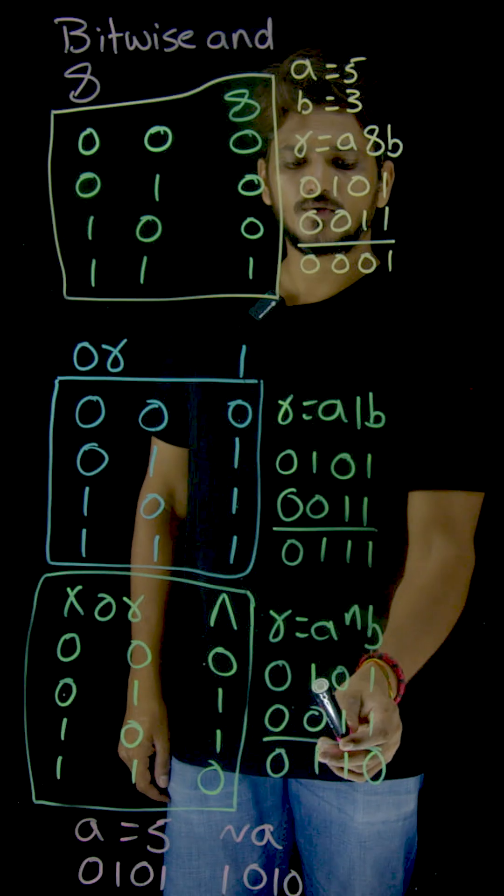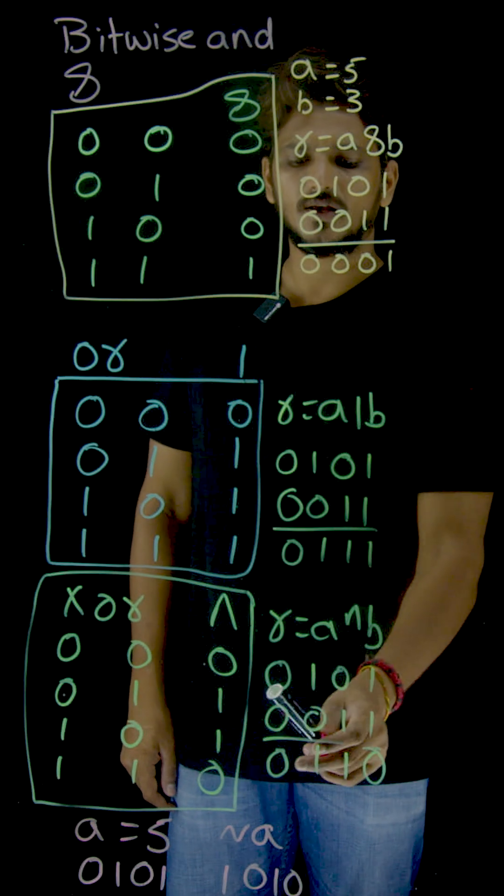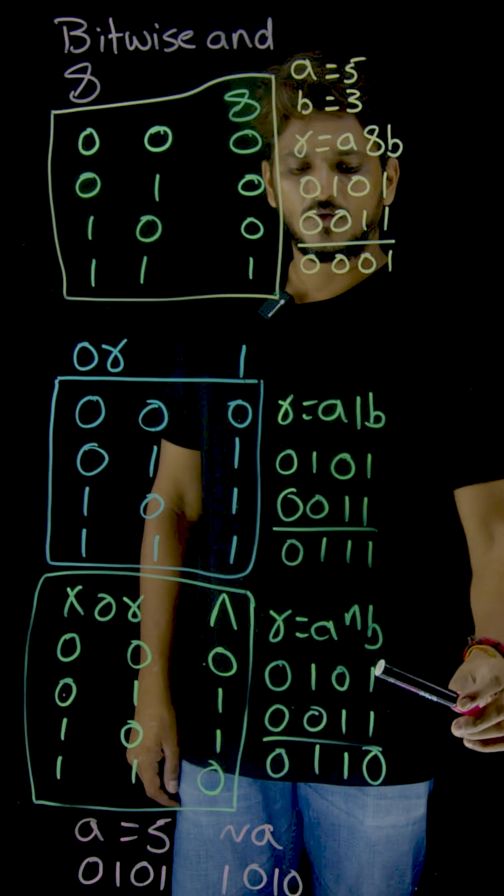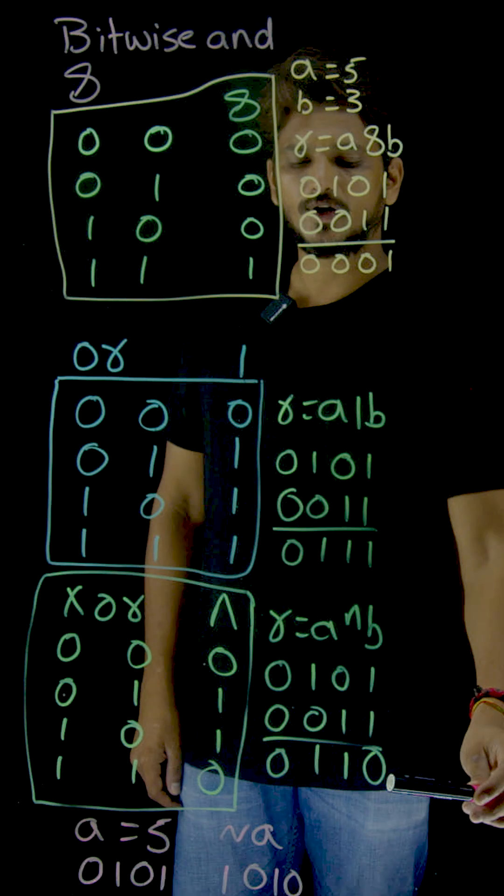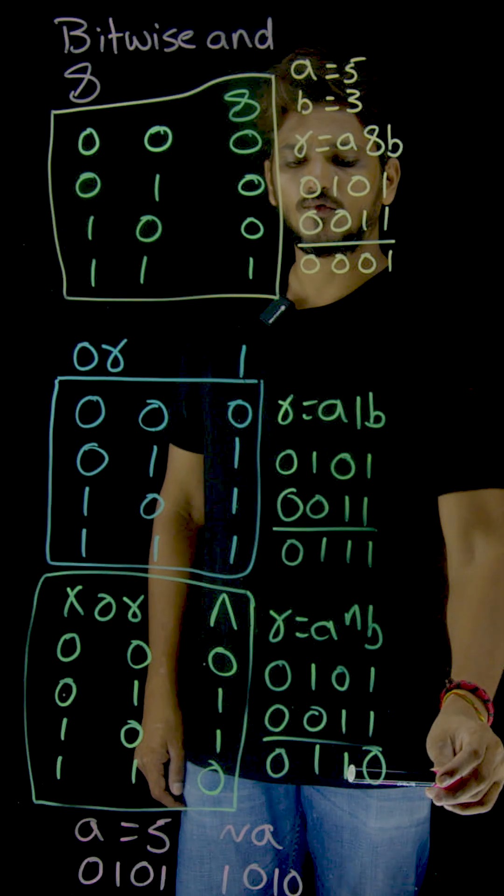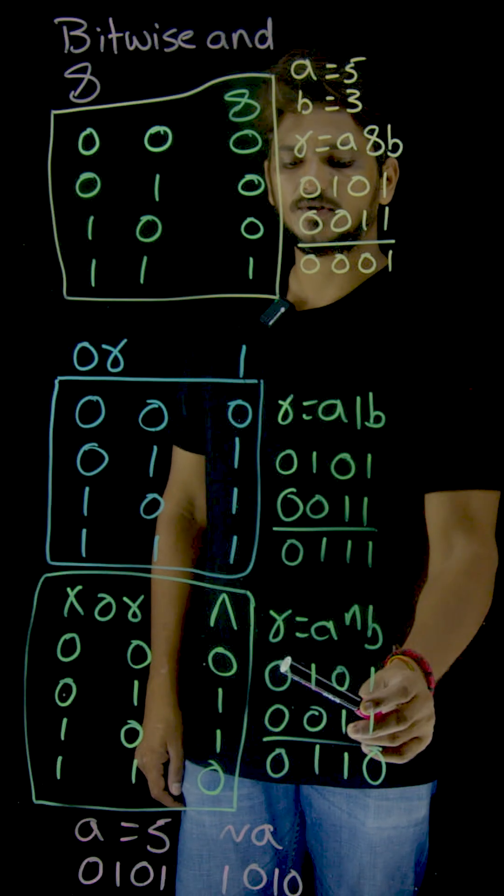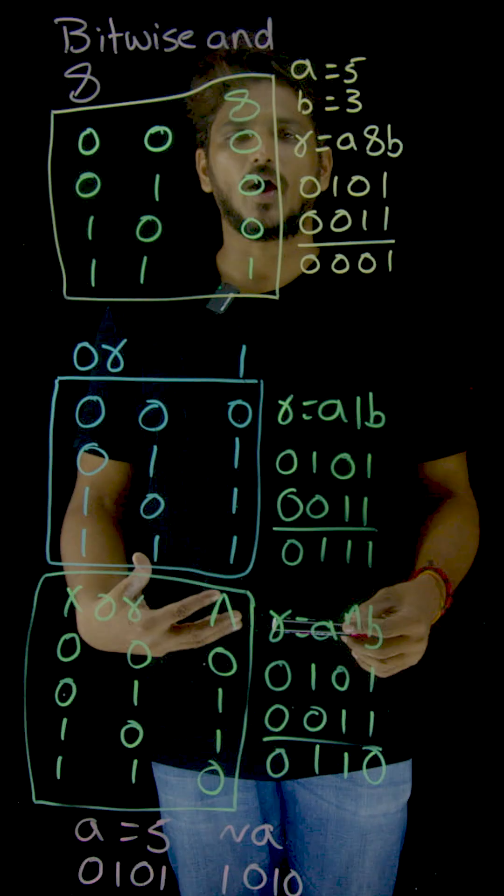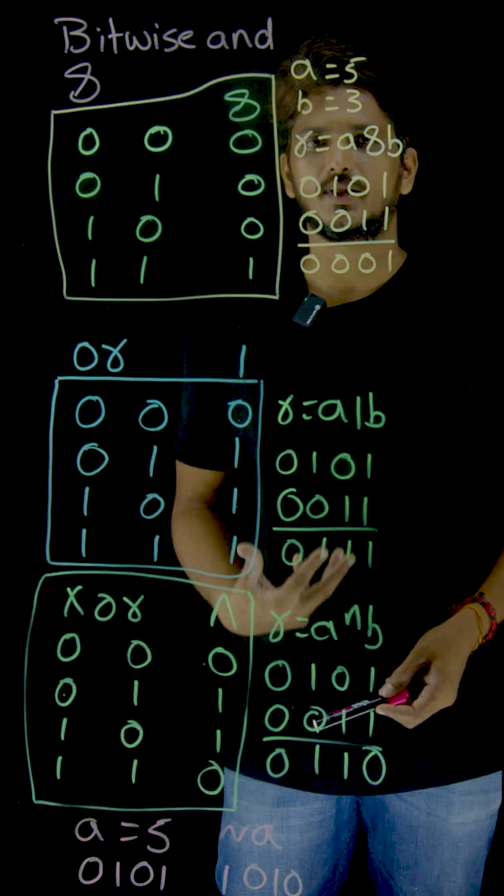Now try to understand 0101 XOR B, 0011. 1 XOR 1, you are going to get 0. 0 XOR 1 equals 1. 1 XOR 0 equals 1. 0 XOR 0 equals 0. This is how XOR operation is going to work.